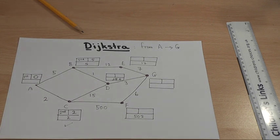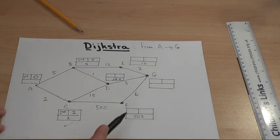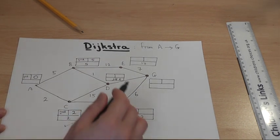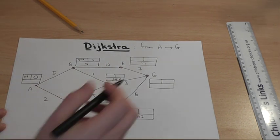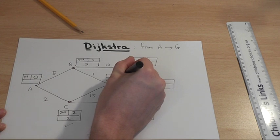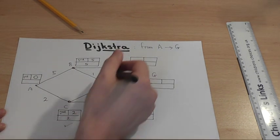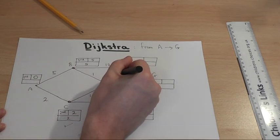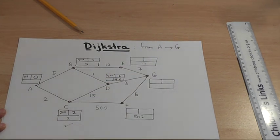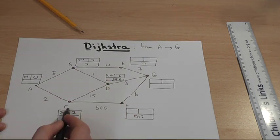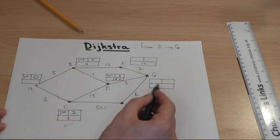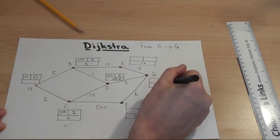And look for the next lowest temporary number in the entire diagram. 502, 6 and 17. 6 is the next lowest. So I make 6 permanent. That's the fourth node. And once you've made a node permanent, you look out at the options. You don't go back upon yourself. You look at the unfilled boxes. 6 plus 3 takes me to 9.